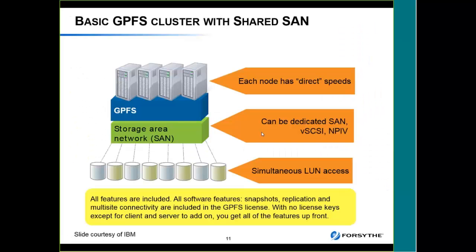Each node in the cluster — whether client or server, no matter what platform — is going to have GPFS installed. Then you have some kind of access to the storage area network: dedicated fiber cards, VIO servers with vSCSI and NPIV, or a combination. When you buy GPFS there are no add-ons. You buy a GPFS license and if it's a server license you get all the snapshots, replication, etc. with that license. There's a separate client license at a reduced price.